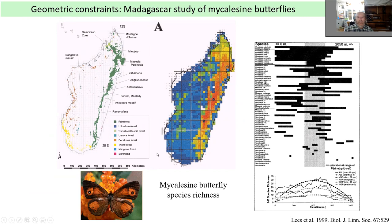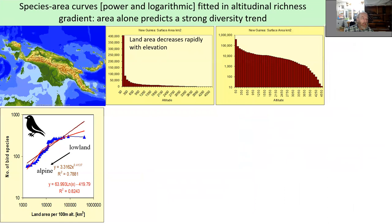Another explanation is so-called geometric constraints: mid-elevation species can mix elements from low elevation, genuine mid-elevation, and high elevation species, creating a mid-elevation peak. There is an example study of butterflies from 0 to 2,050 meters showing such a mid-range peak in elevation. The same phenomenon can be seen from south to north - how rainforests are located - where in the middle, where presumably species from south and north can mix, diversity is again highest.